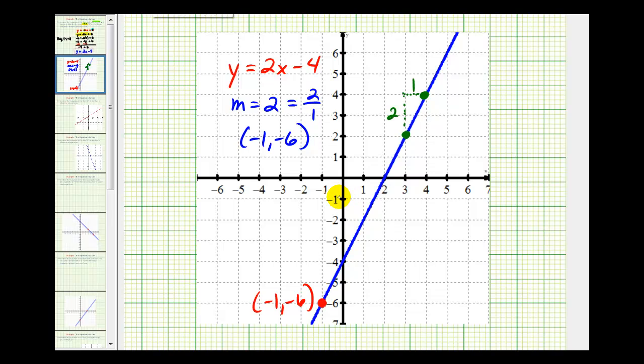And notice that the y-intercept of this line is also negative four. So the equation of the line in slope-intercept form would be y equals two x minus four. Again, here's our slope. And here's our y-intercept. I hope you found this helpful.